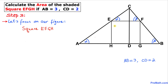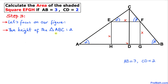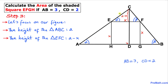Now let's focus on square EFGH. Since it's a square it has all equal sides, so I'm going to call each side X. We know that the height of triangle ABC is 2, which is CD. The height of the square is also X, so this part of the altitude above the square is going to be 2 minus X. Thus the height of the smaller triangle EFC is 2 minus X.